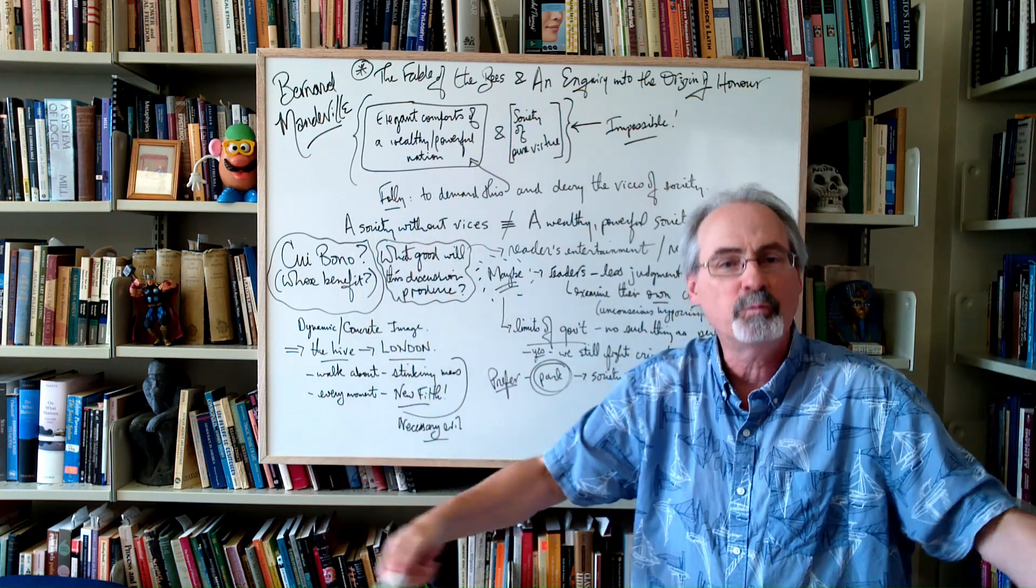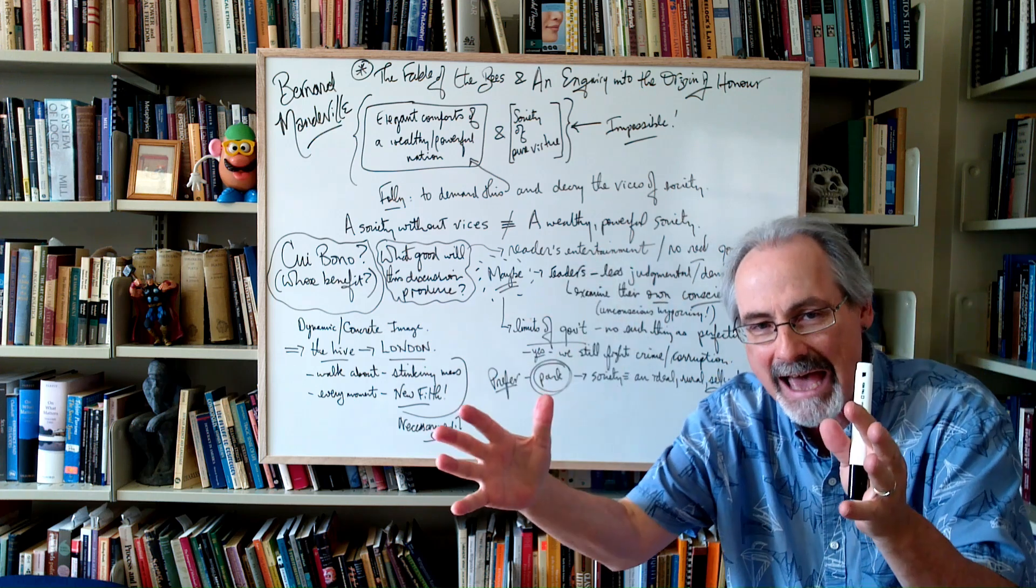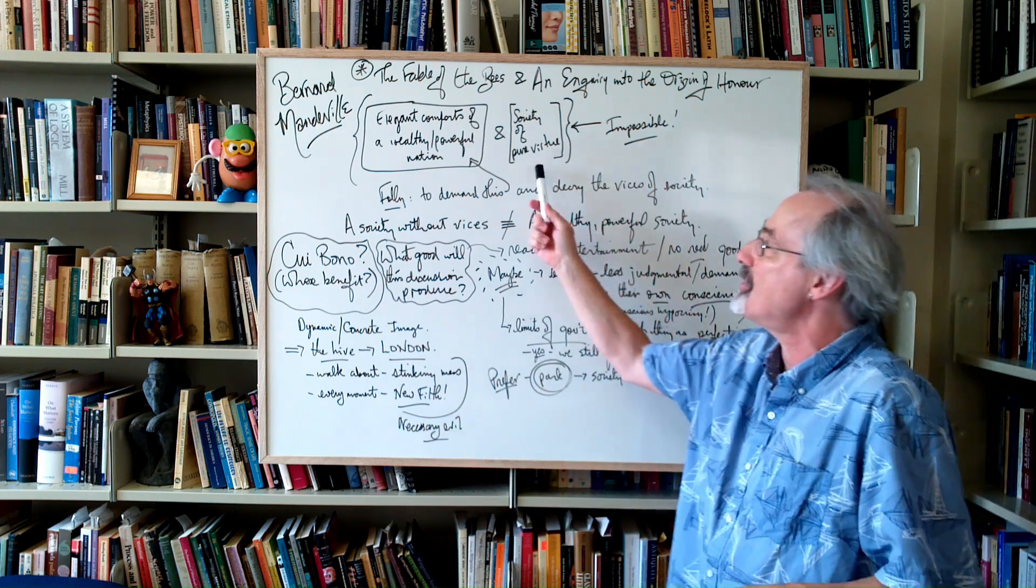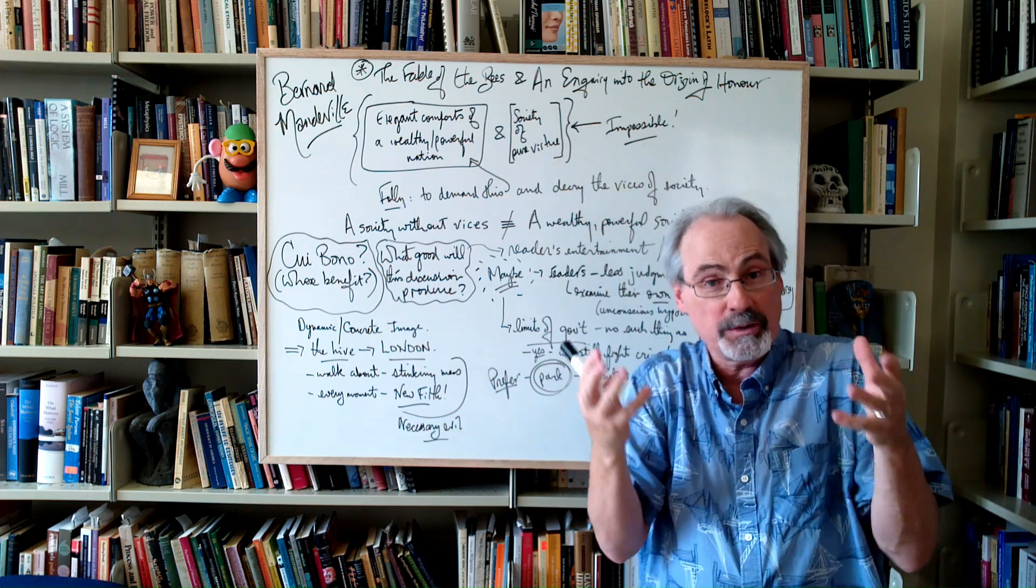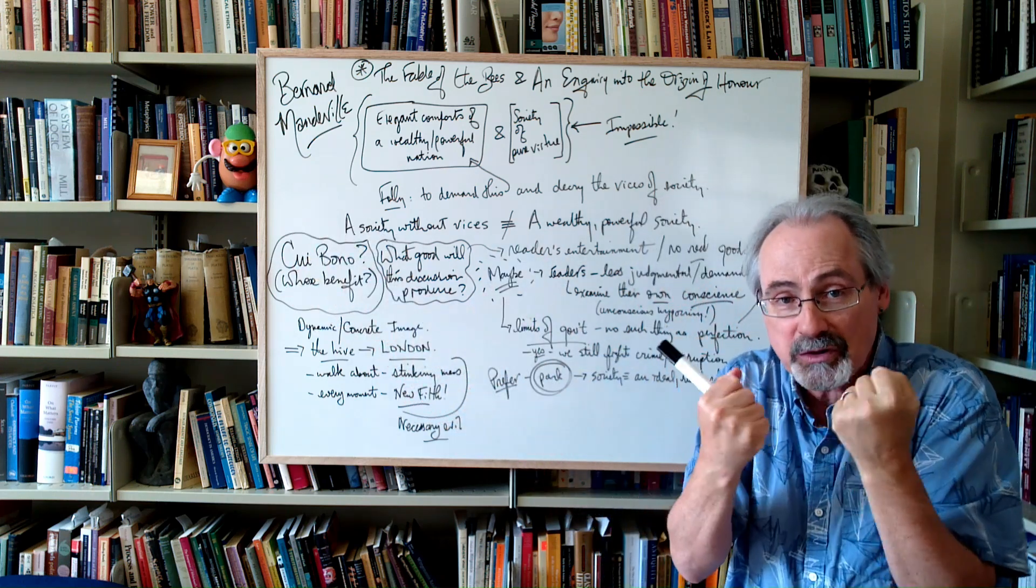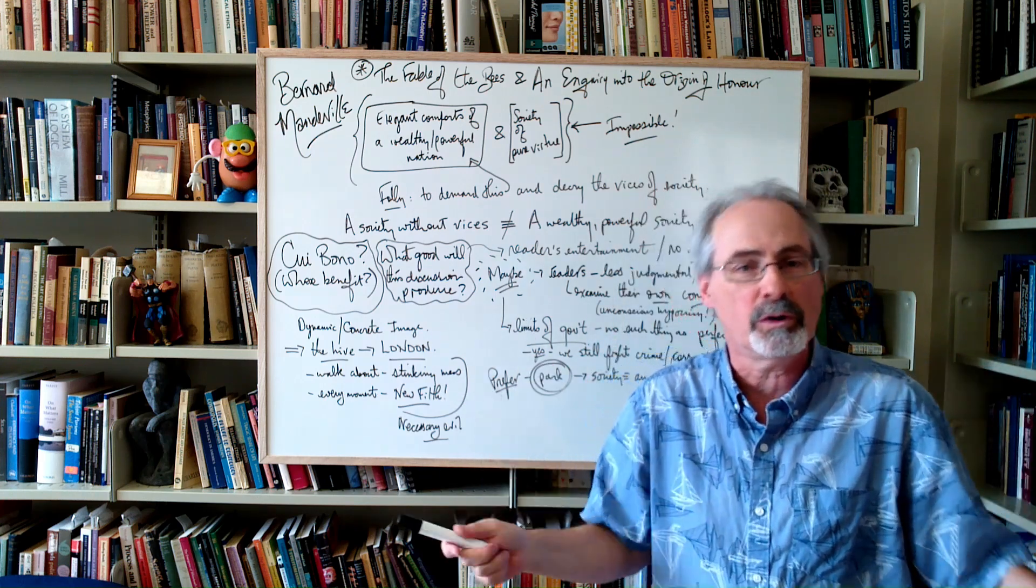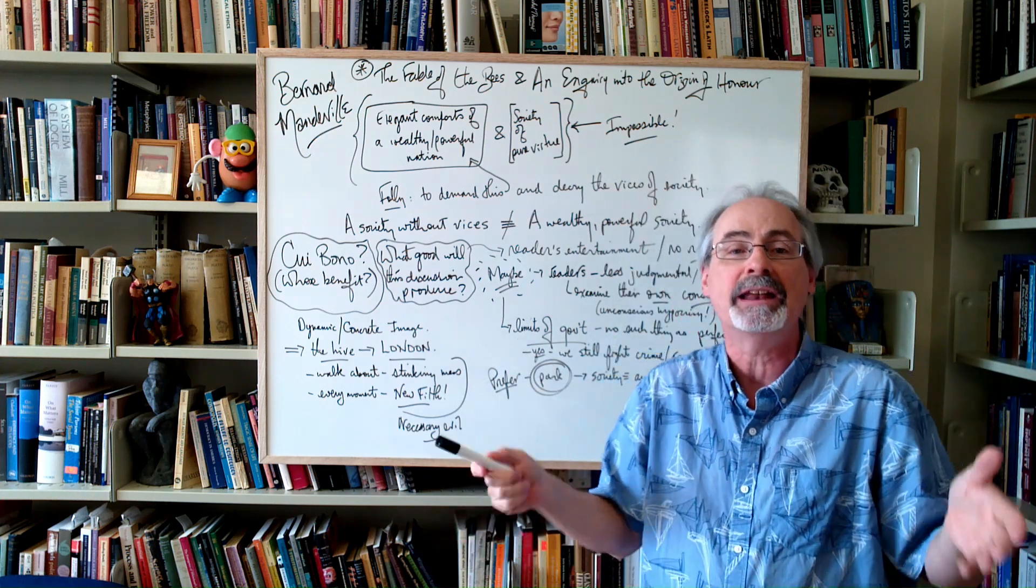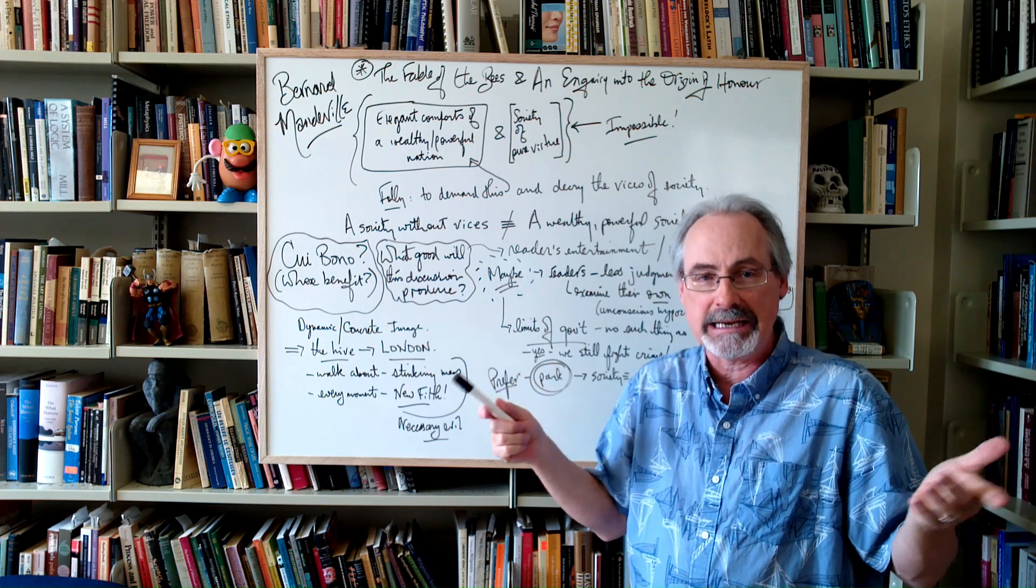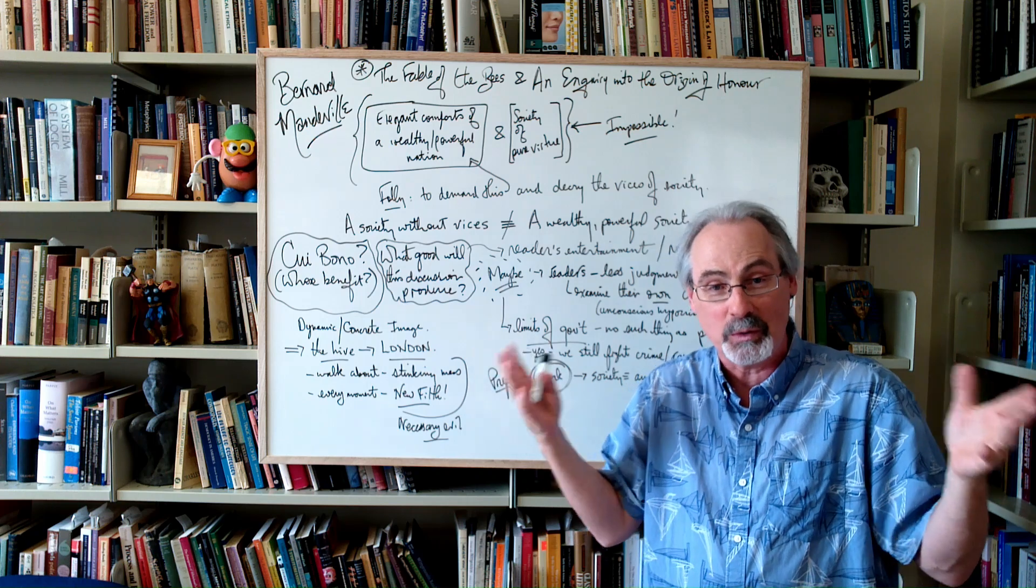To have that wealthy, powerful society and demand that that nation be one of virtue, just pure virtue - to try and put those together, that's impossible. You can't do it. It doesn't work. Reality is just not like that. That is a contradiction and contradictions just don't exist in reality. That's the whole idea.